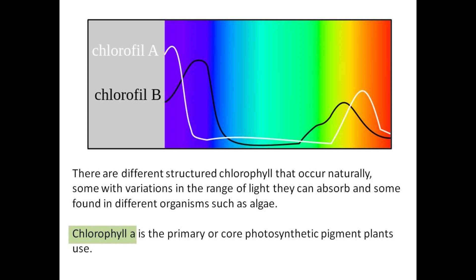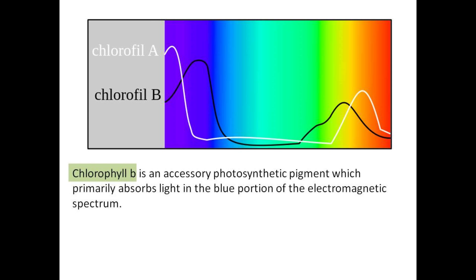Chlorophyll A is the primary or core photosynthetic pigment plants use. Chlorophyll B is an accessory photosynthetic pigment, which primarily absorbs light in the blue portion of the electromagnetic spectrum.